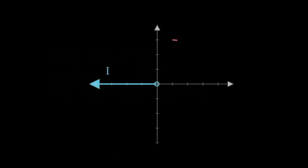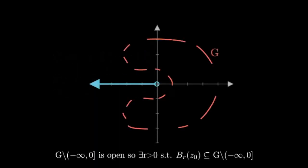We first have a domain that excludes the interval I. Then G without the interval I is open, so there exists an r ball contained within G without I.